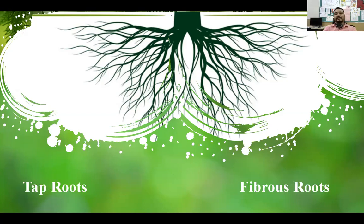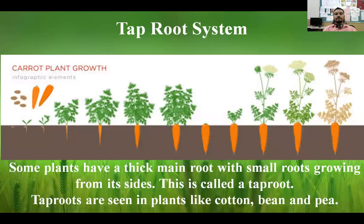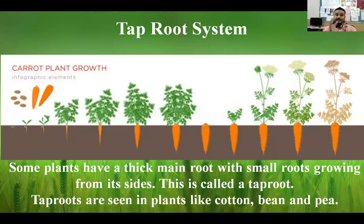There are two types of roots: tap root and fibrous root. In the tap root system, the main root is very thick. Smaller side roots grow from it. For example, carrot — you can see the root growing step by step, becoming thicker and thicker. The main root of the plant is thick while it has small side roots.